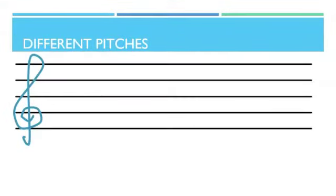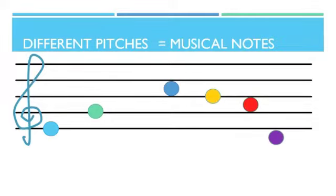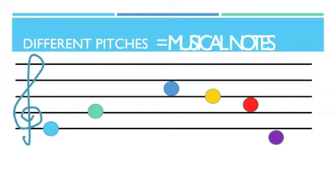This is a pitch. This is a pitch. And these are all pitches too. A pitch is only one musical note. It can have a name like E or Mi, or G or Sol.